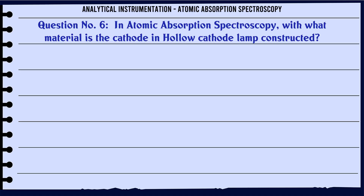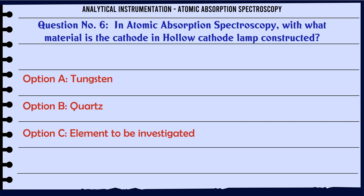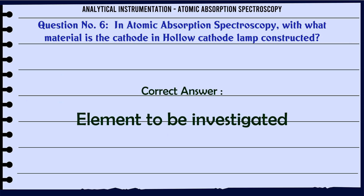In atomic absorption spectroscopy, with what material is the cathode in the hollow cathode lamp constructed? A. Tungsten. B. Quartz. C. Element to be investigated. D. Aluminium. The correct answer is element to be investigated.